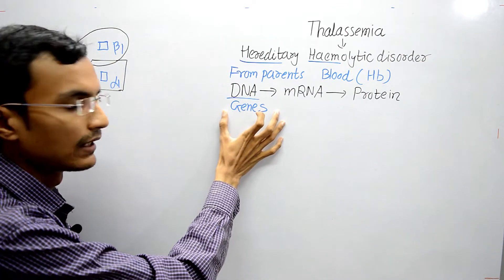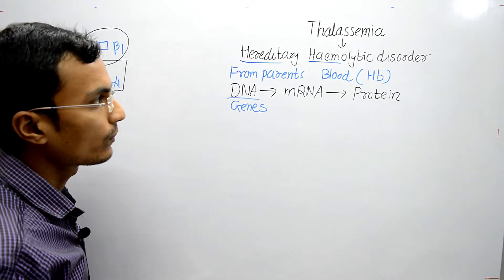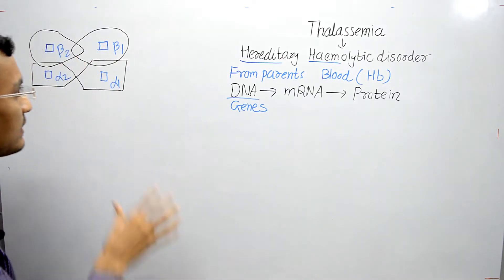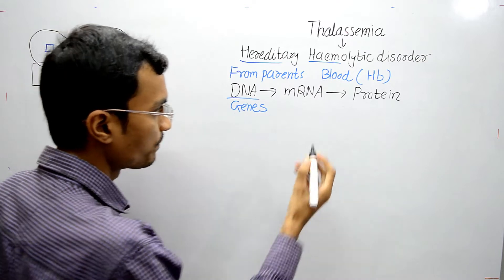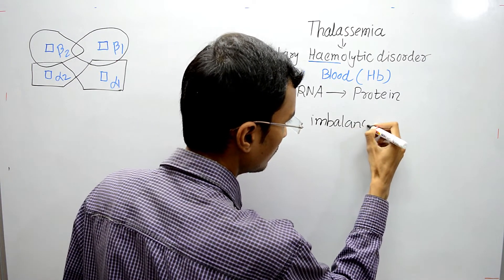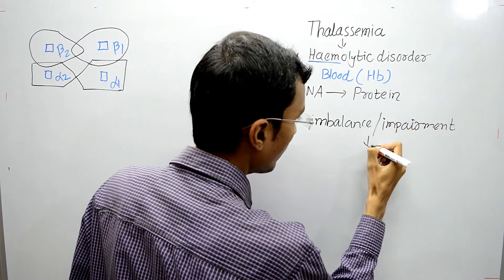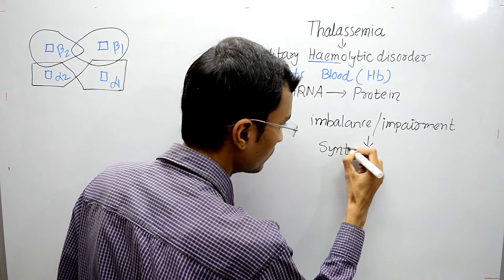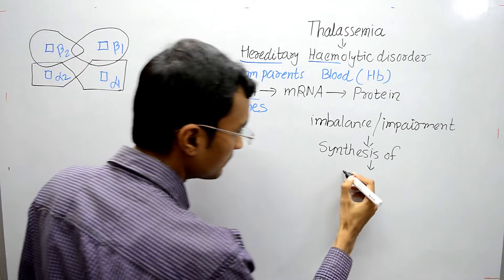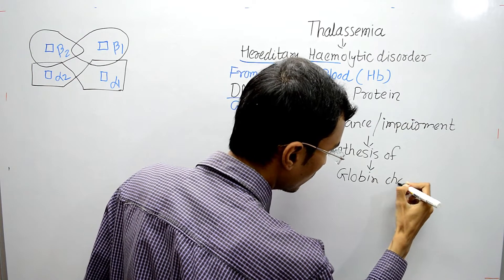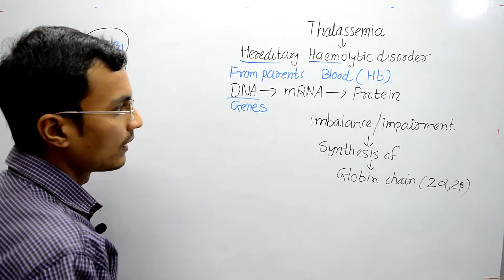Now if a gene is missing — meaning it is deleted or some kind of mutation is present — there will be impairment or imbalance in the synthesis of globin chains of Hemoglobin. This imbalance or impairment in the synthesis of these globin chains, which are 2 Alpha and 2 Beta globin chains, is known as Thalassemia.